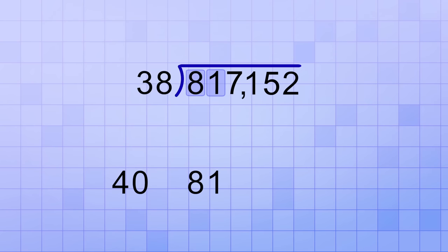38 is close to 40 and 81 is really close to 80. And since 80 is 2 times 40, my estimate for the first answer digit will be 2. 2 times 38 equals 76. And 81 minus 76 leaves a remainder of 5. We know our estimate was just right because 5 is less than our divisor of 38.